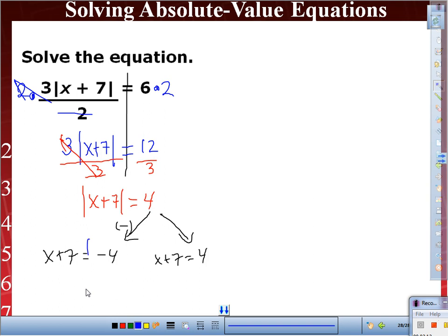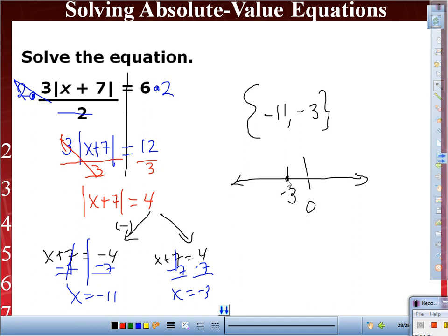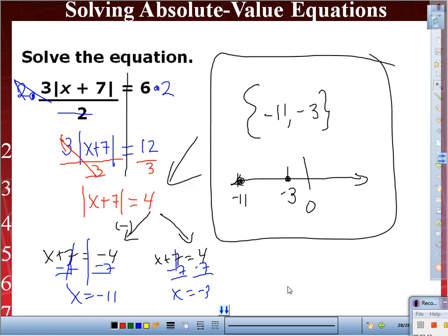So we write negative four and a positive four. What's inside? x plus seven, x plus seven. From there, minus seven minus seven, x equals negative eleven. Bless you. Minus seven minus seven, x equals negative three. Therefore, solution set: negative eleven comma negative three. And then our plot: negative three, negative eleven. And this is what I needed to see, including the work on Friday's Part K.